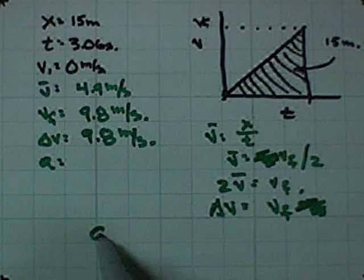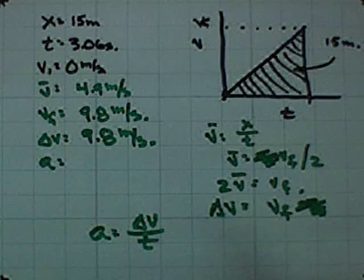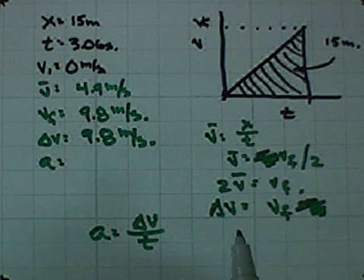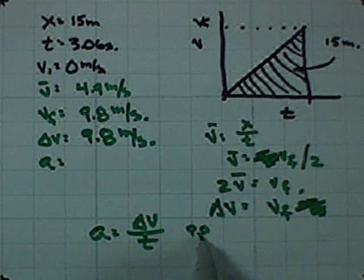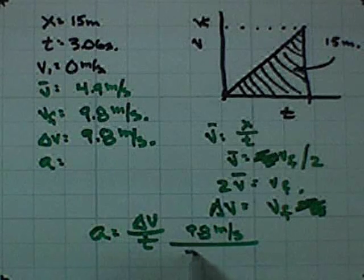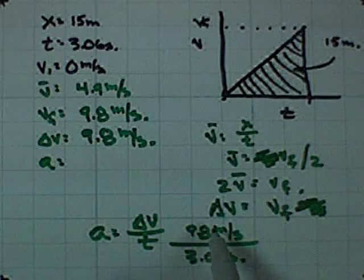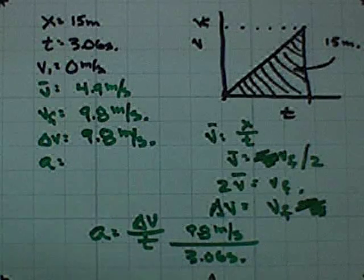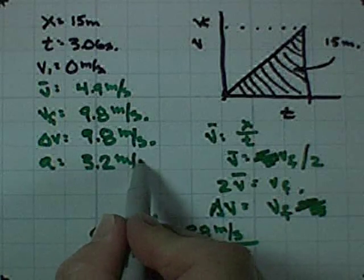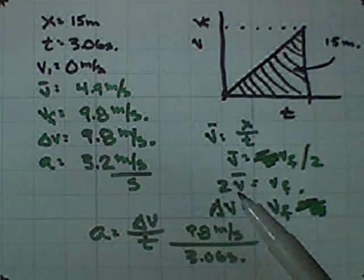And finally, acceleration is equal to change in velocity divided by time. So, it's 9.8 meters per second divided by 3.06 seconds, and that turns into about 3.2 meters per second per second, or 3.2 meters per second squared.